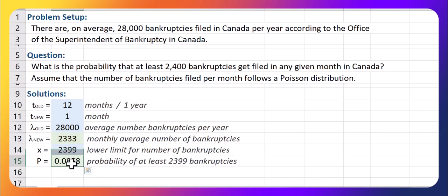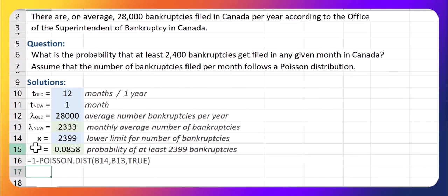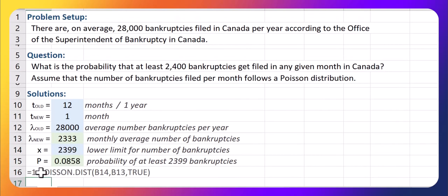Let me just grab this formula and display it because it's hard to see it here. Okay, so that's my formula. Again, I'm going to do a 1 minus 2399, 2333, comma true to get the probability of at least 2,400 bankruptcies.